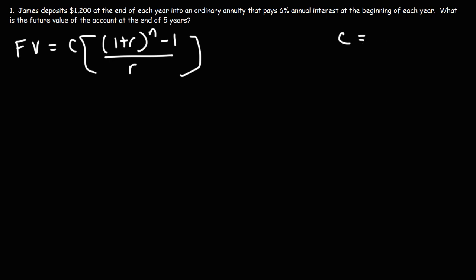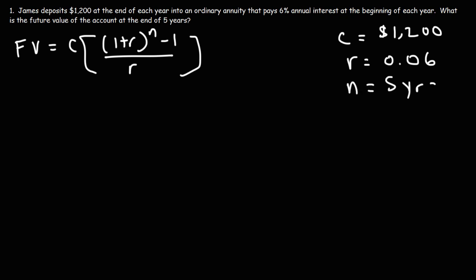James is making a deposit of $1,200 at the end of each year, and the ordinary annuity pays an annual interest of 6%, which as a decimal is 0.06. The annual interest is paid at the beginning of each year, so his first deposit doesn't receive interest until the second year. Thus, after he makes five deposits, he's only going to receive four interest payments over a time period of five years, because he missed the first interest payment at the beginning of the first year. N, the number of years, is 5, since the deposits are made on an annual basis.